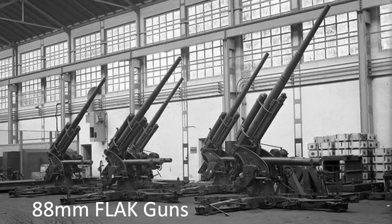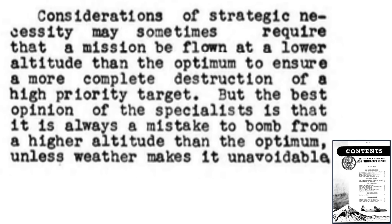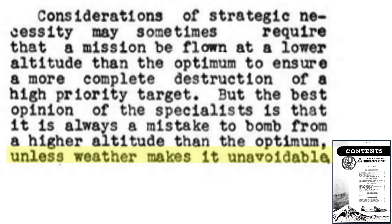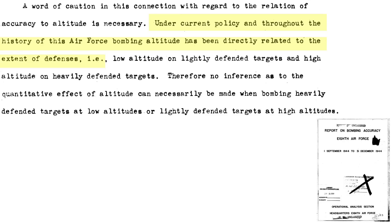If the bombers flew at 27,000 feet, the formations would be out of the 88mm gun's effective range — so why not just bomb from 27,000 feet? An April 1945 21st Bomber Command Air Intelligence report addresses this: sometimes the altitude selected is below optimum to ensure a high-priority target is destroyed, meaning a higher bomber loss rate is tolerated against target destruction. Crews are recommended not to attack above the optimum altitude unless weather forces them higher. It is 8th Air Force policy to attack lightly defended targets at lower altitudes and highly defended targets at higher altitudes.